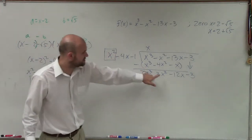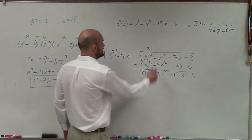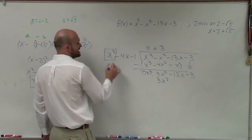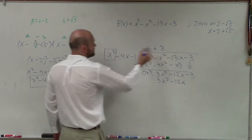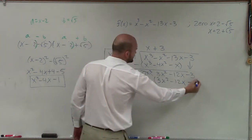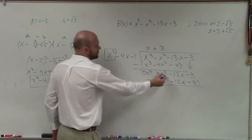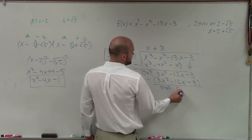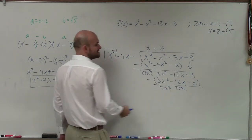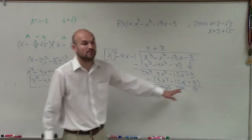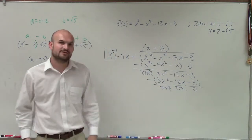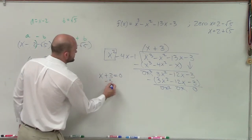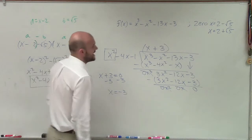Now I work to divide the leading term into the next: x² goes into 3x², positive 3 times. 3 times x² is 3x²; 3 times -4x is -12x; and 3 times -1 is -3. Then again I group my terms and subtract. 3x² - 3x² = 0; -12x - (-12x) = 0; and -3 - (-3) = 0. So we have a remainder of 0. My final factor is x + 3, and setting x + 3 = 0 gives x = -3.